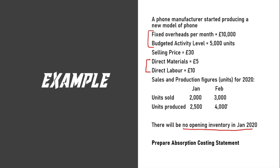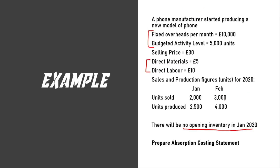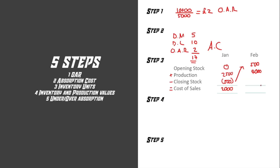For February, the production units are 4,000 and the cost of sales is 3,000. To get the closing inventory we do opening inventory plus production minus cost of sales, and that missing figure is 1,500 units. That completes step three.